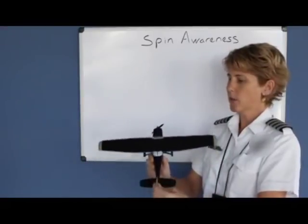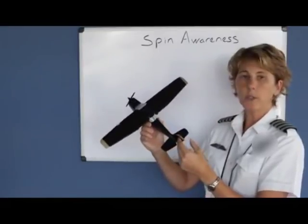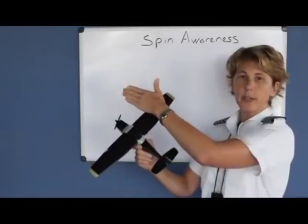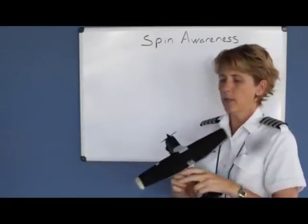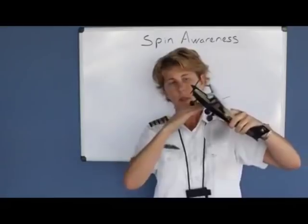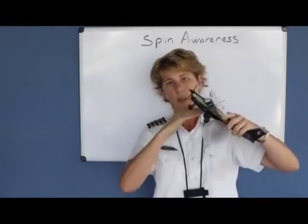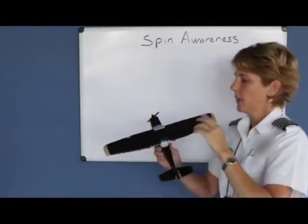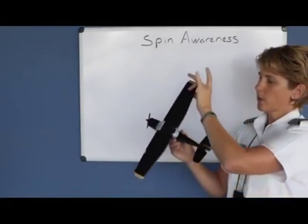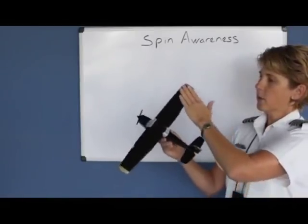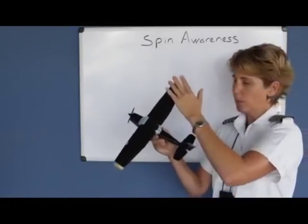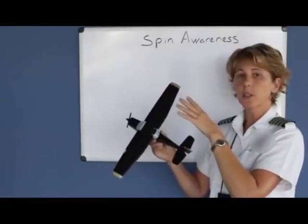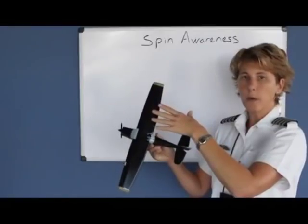Let's say you were doing a stall and you pitched the airplane up, but you were holding too much rudder, and one wing moved faster through the air than the other wing. At the point that the wings meet the critical angle of attack — when the relative wind strikes from underneath the airplane because you've pitched it up too high — the wings are going to stall. But because the outer wing moves faster through the air due to being uncoordinated, it creates a little bit of lift and causes a rolling motion in the airplane.